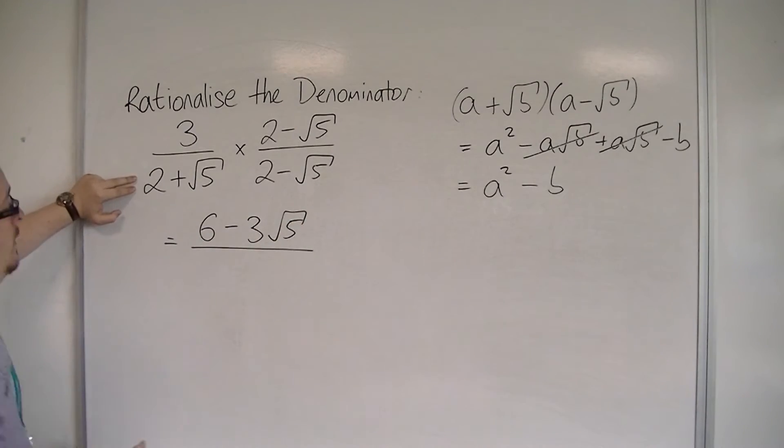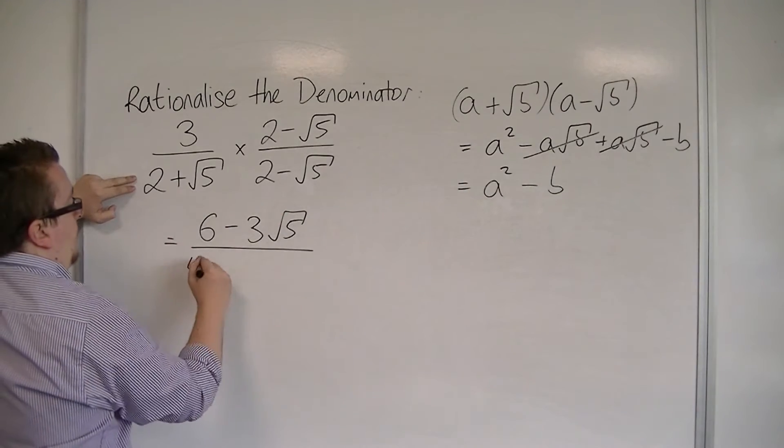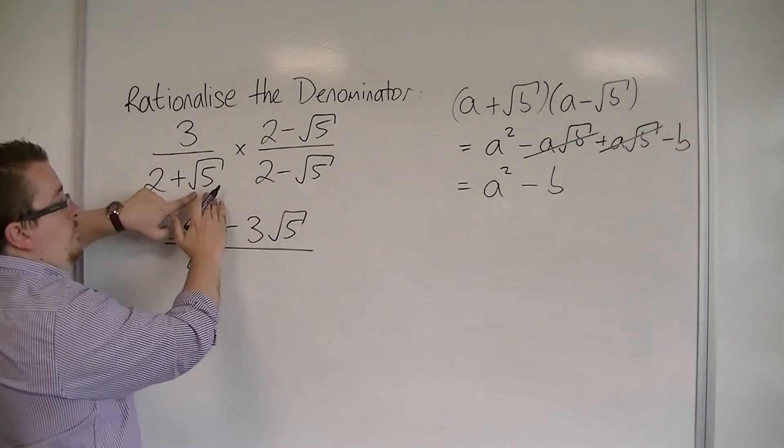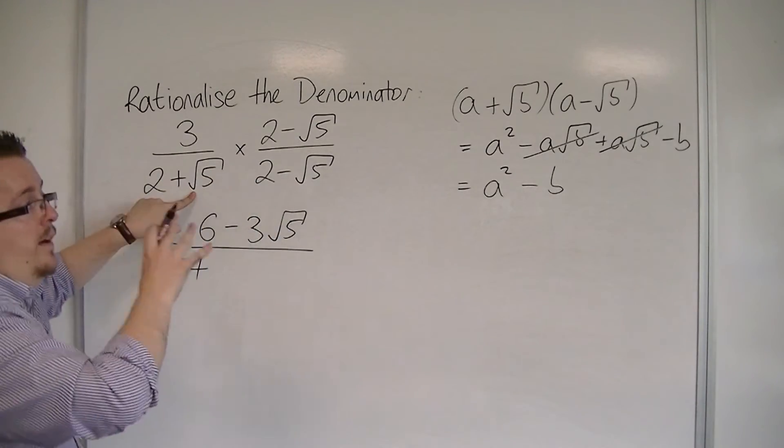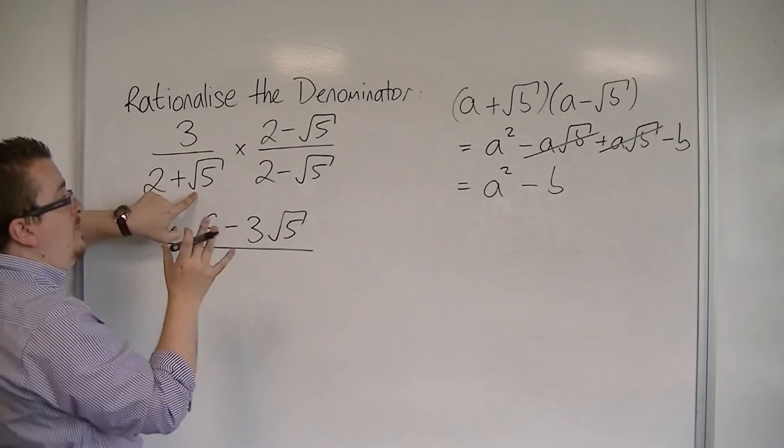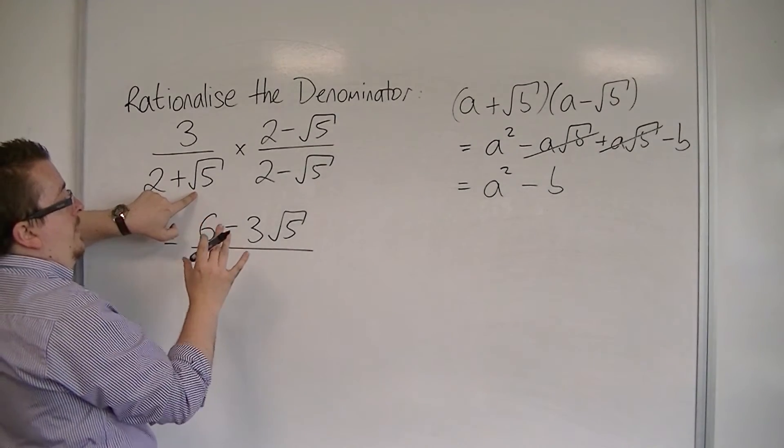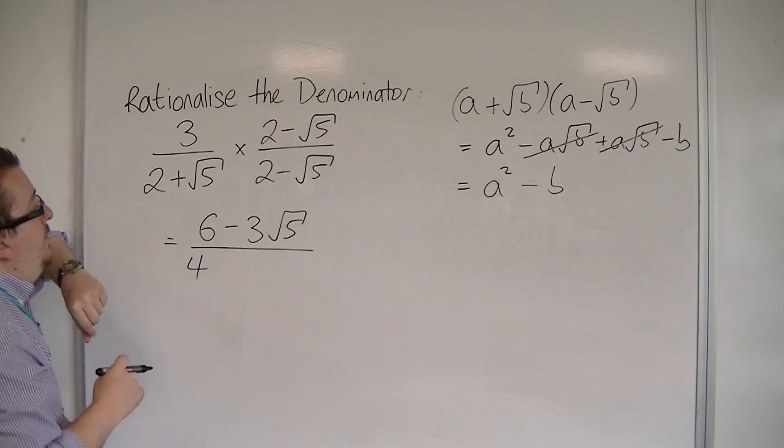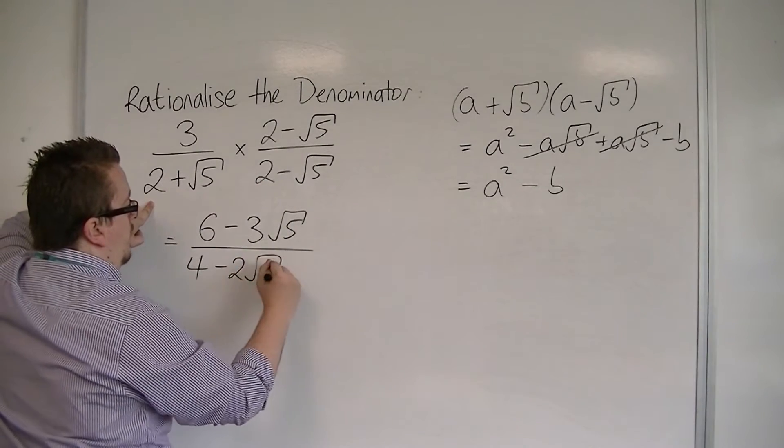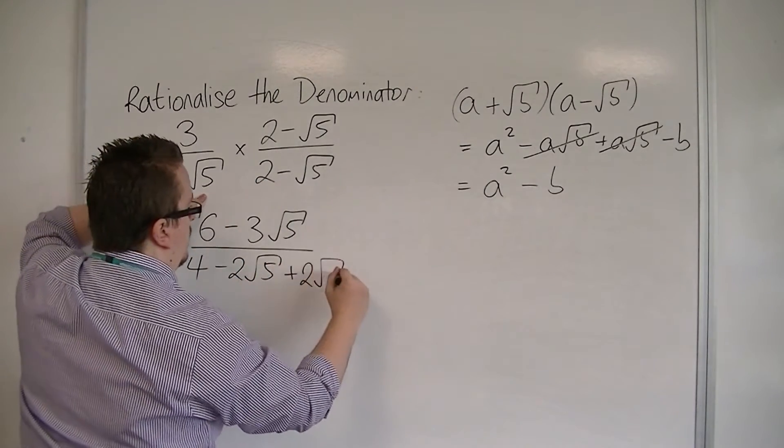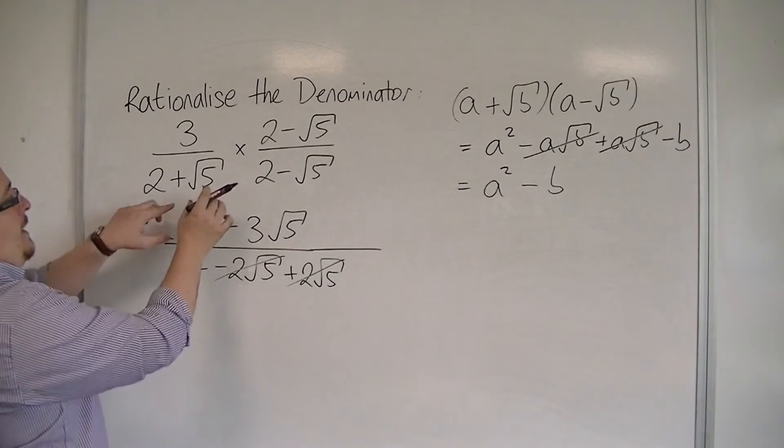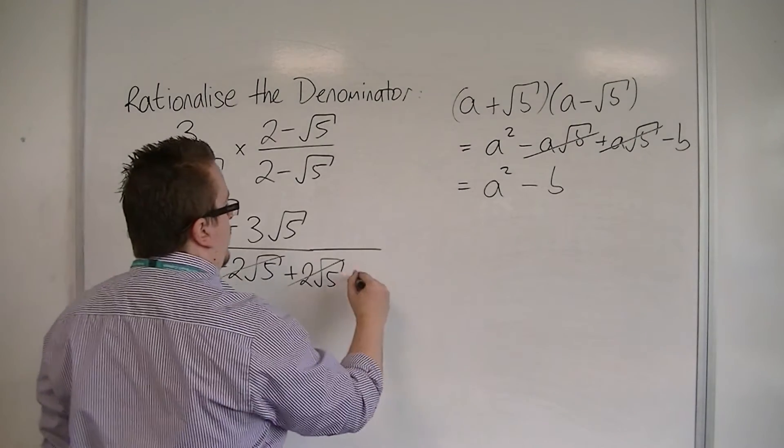In the denominator, I'll have 2 times 2, which is 4. I've got 2 times minus root 5, and 2 times root 5, which is the part, this part, that cancels each other out. So I don't need to worry about that bit. I will write it down here, just so you can see how it's working. So we have minus 2 root 5, and we've got a plus 2 root 5. So those are the bits that cancel each other out. And I've got the root 5 times minus root 5, which would just be minus 5.